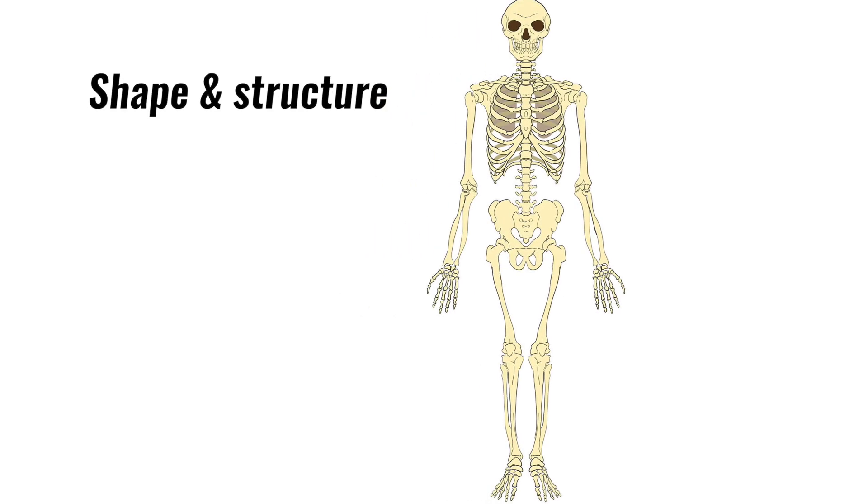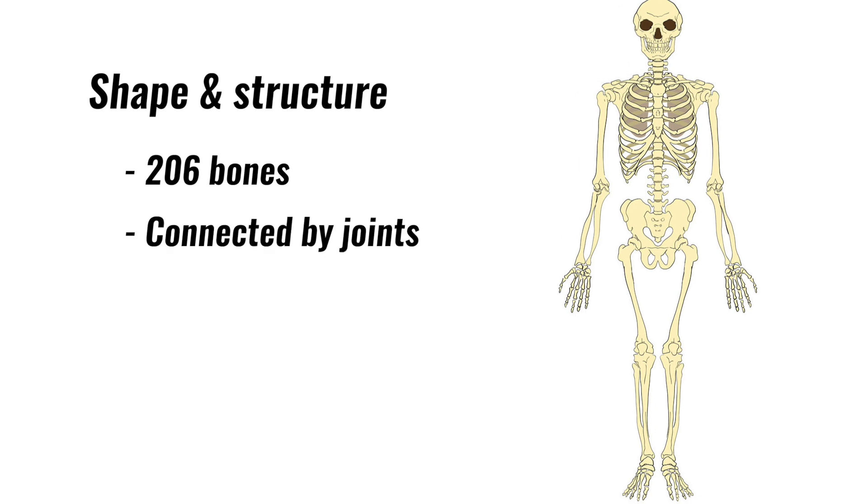There are 206 bones in the human body. They are connected together at joints to provide a frame which gives our body shape, structure and support. Bones also protect major organs.